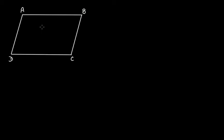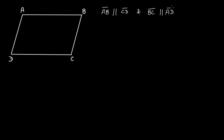This figure represents a quadrilateral ABCD because it has four sides. The opposite sides — AB and CD, and AD and BC — are parallel to each other. Side AB is parallel to side CD, and side BC is parallel to side AD. Therefore this quadrilateral is a parallelogram.